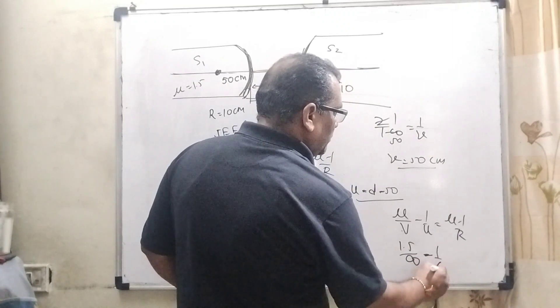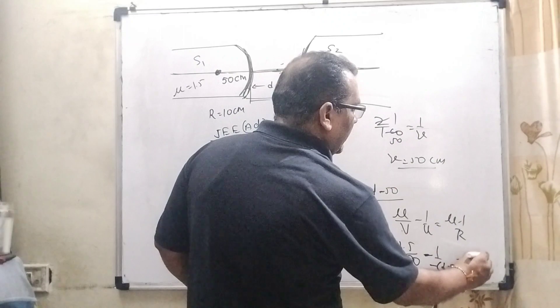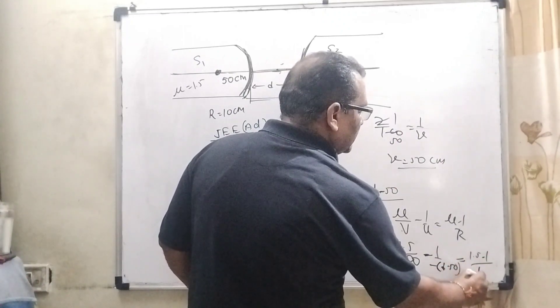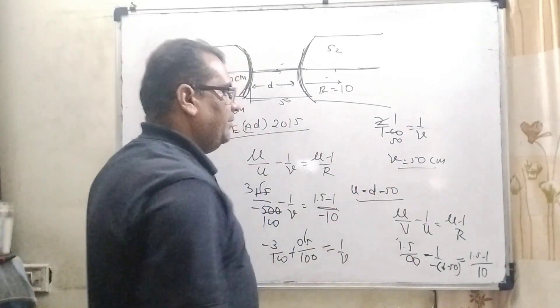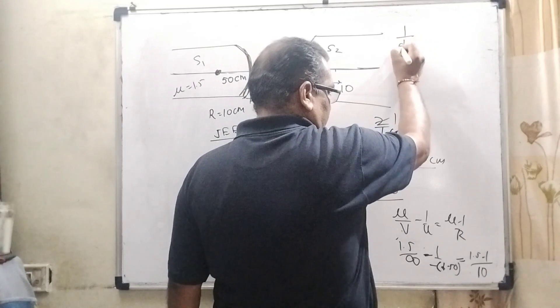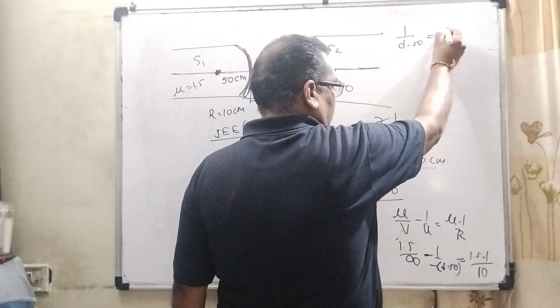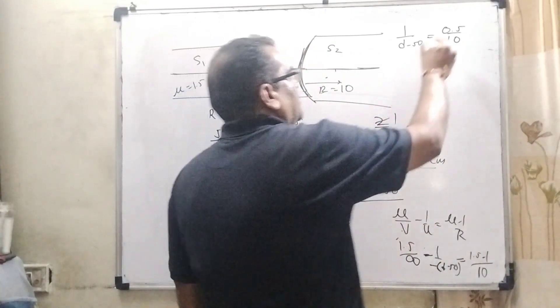D minus 50 equal to 1.5 minus 1, and R is 10. Here 10 is positive. So, something upon infinity becomes 0, minus minus here becomes plus. Then 1 by D minus 50 equal to 0.5 upon 10.